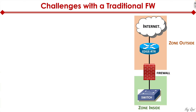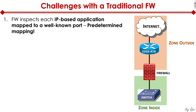This is a network topology you looked at a couple of slides ago. An internet connection terminated into an edge router, and that edge router has a firewall sitting behind it, and then a switch. We have the zone outside represented in orange, and the zone inside represented in green. In a traditional firewall scenario, the firewall inspects each IP-based application, which is mapped to a well-known port — a predetermined mapping. An IP is mapped to a port and assigned a certain application.